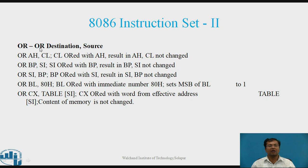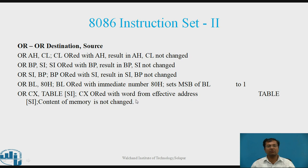Second type: OR. Syntax: OR Destination, Source. Example: OR AH, CL — CL content is OR-ed with AH; result in AH; CL will not be changed. OR BP, SI — SI OR-ed with BP; result in BP; SI will not change. OR BL, 80h — BL is OR-ed with immediate number 80h, setting the MSB of BL to 1. OR CX, TABLE[SI] — CX is OR-ed with word from effective address TABLE+SI; memory content not changed.